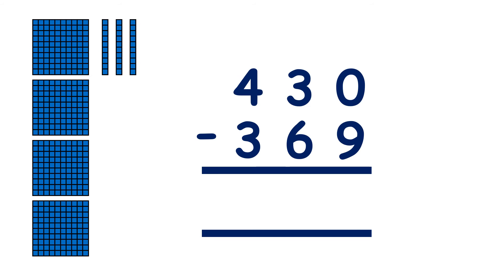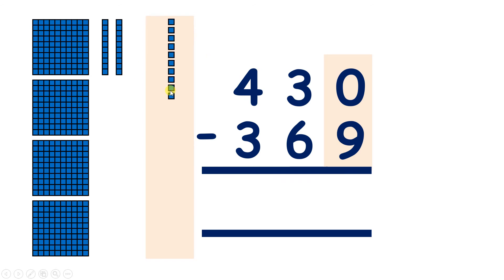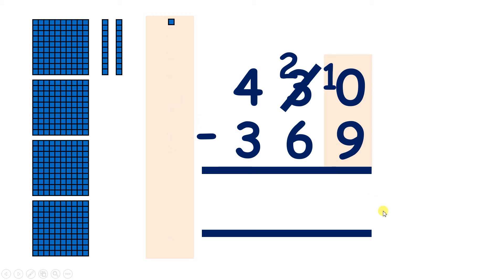Now pause the video and see if you can answer 430 minus 369 using the column method. Starting with the units, we have no units but we need to take away 9, so what do we need to do? We need to exchange one of our tens for 10 units. So now we have 2 tens — 1 less than 3 — and we have 10 units. Now if we have 10, we can subtract 9, and that leaves us with 1.